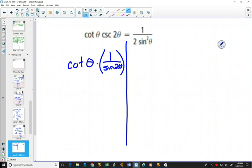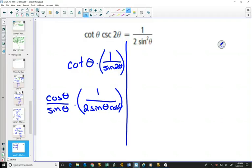Now if I change cotangent to sine and cosine, and I change 1 over sin 2θ, because I have a formula for that—2 sin θ cos θ.